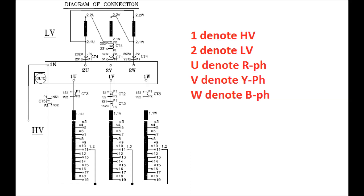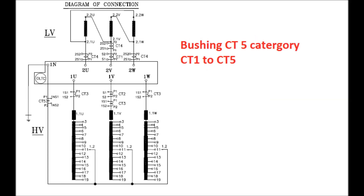A diagram is shown in the nameplate depicting the tap winding, HV side winding, and LV side winding. Terminals 1U, 1V, and 1W represent the HV side red, yellow, and blue phases respectively, and 1N represents the HV side neutral which is connected to earth. Terminals 2U, 2V, and 2W represent the red, yellow, and blue phases of the LV side winding. There are different bushing CTs shown in the diagram: CT1, CT2, CT3, CT4, and CT5, whose purposes will now be discussed.